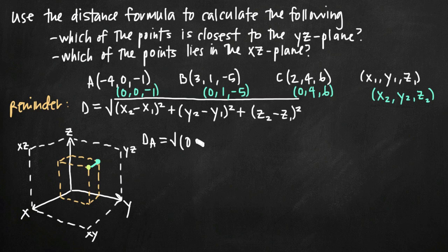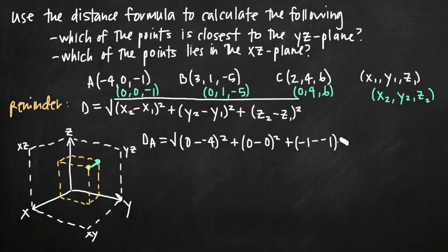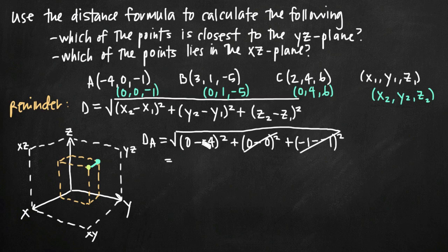For the distance from point A to the yz-plane, we compute the square root of (0 minus -4) squared plus (0 minus 0) squared plus (-1 minus -1) squared. The y and z terms both equal zero and cancel out. We get 0 minus -4, which is positive 4 squared, equaling 16. The square root of 16 is 4, so the distance between point A and the yz-plane is 4 units.